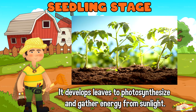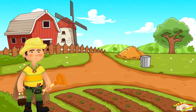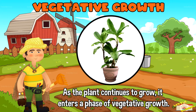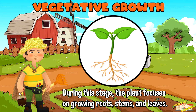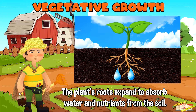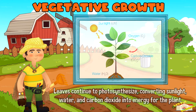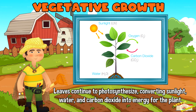Vegetative growth: as the plant continues to grow, it enters a phase of vegetative growth. During this stage, the plant focuses on growing roots, stems, and leaves. The roots expand to absorb water and nutrients from the soil, while the stem supports the plant and transports water and nutrients to the leaves. Leaves continue to photosynthesize, converting sunlight, water, and carbon dioxide into energy for the plant.